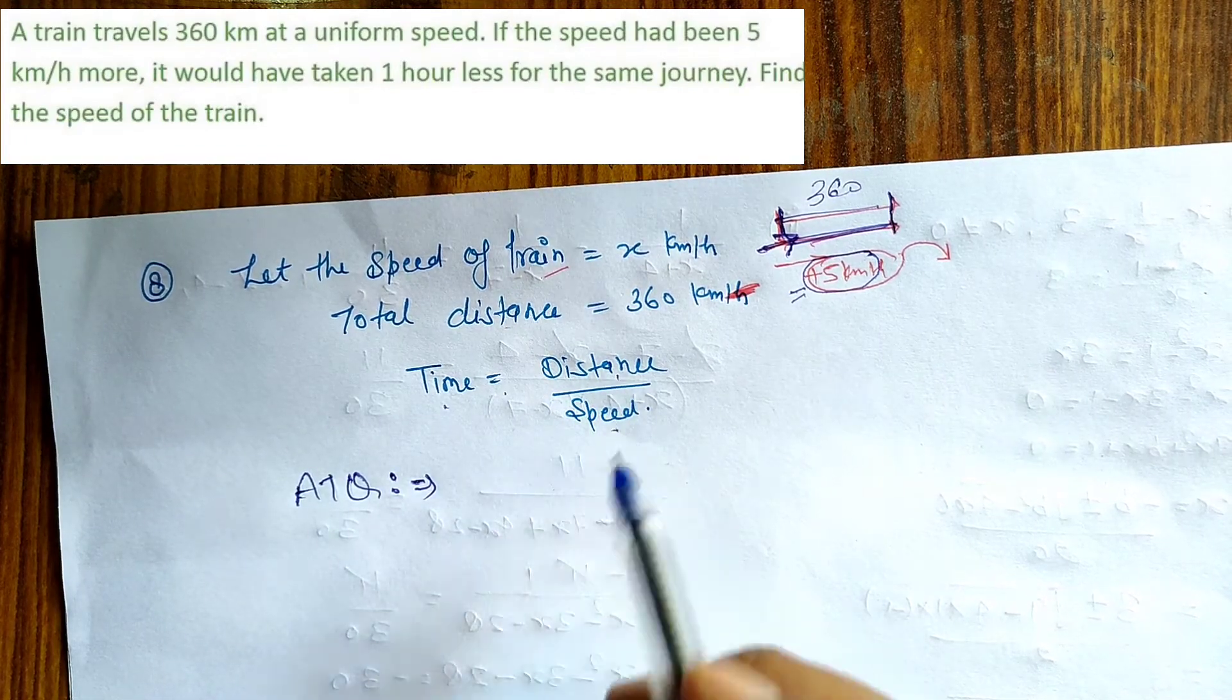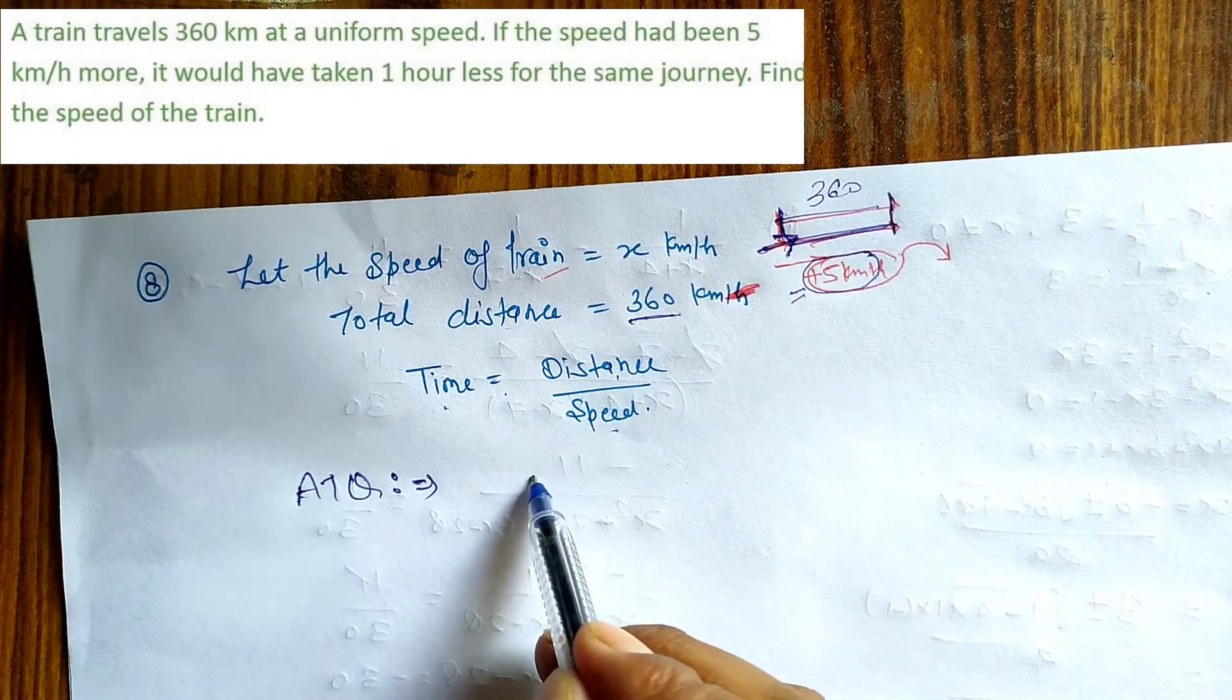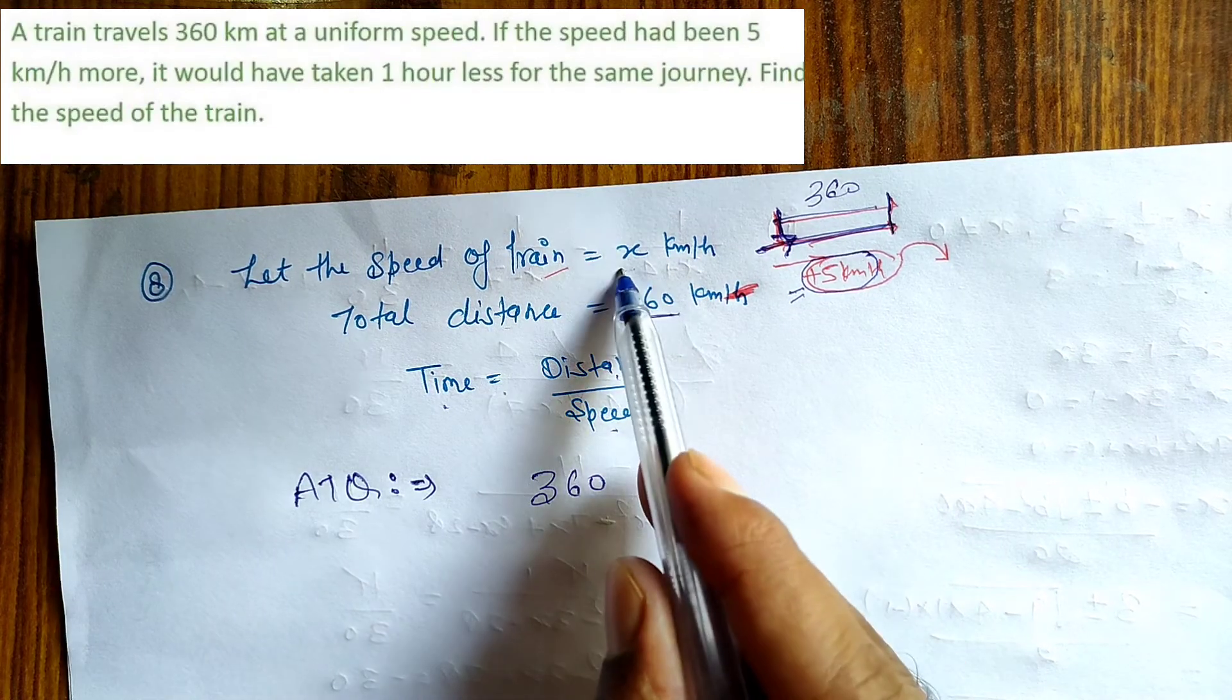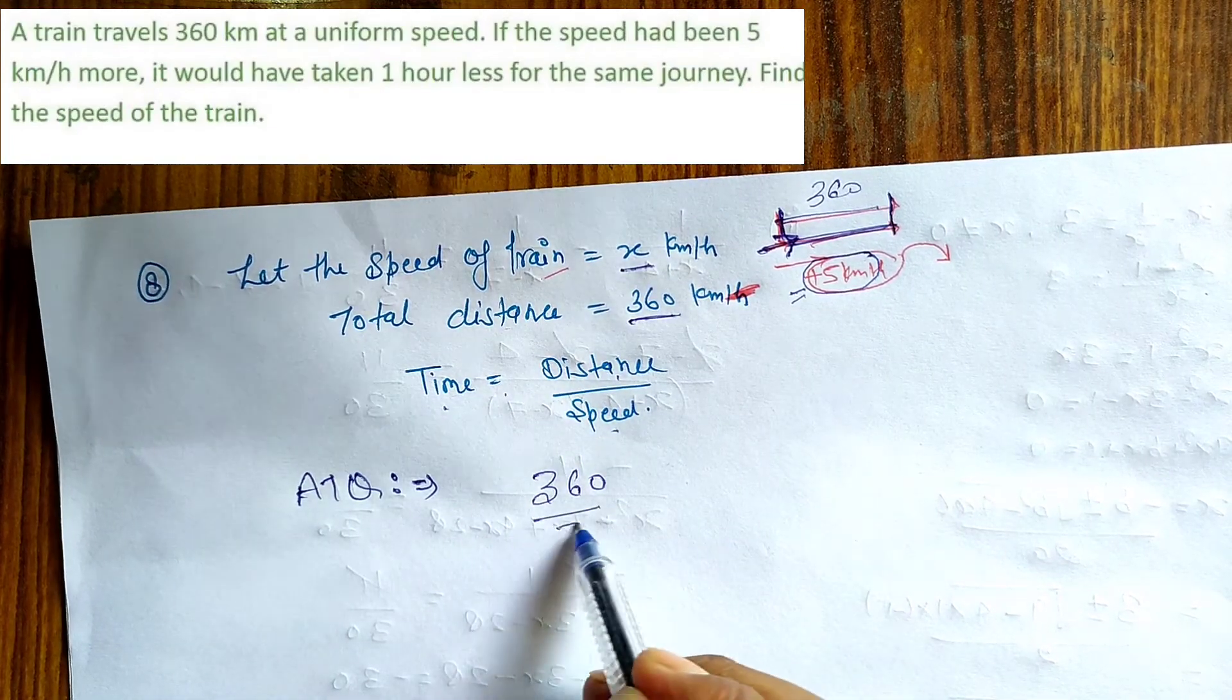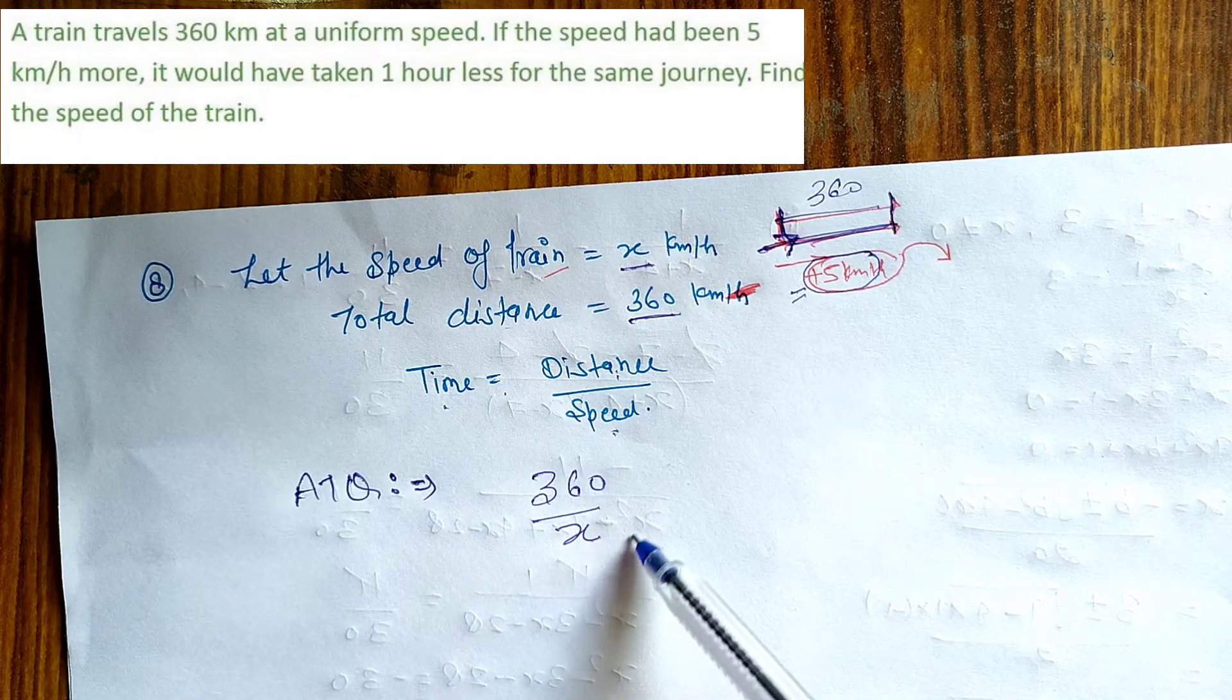Now, Time is equal to Distance upon Speed. My distance is 360 and speed is x, so 360 upon x. This distance upon speed, this is my time.